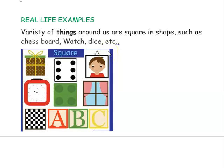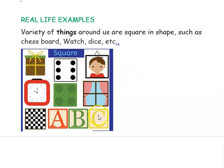Let us see a few real-life examples of square shapes. A chess board, watch, dice, photo frame, alphabet blocks, gift boxes, and windows are all examples of square-shaped objects.